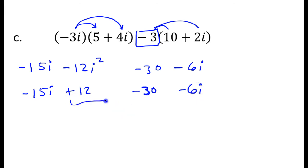So combining like terms, we've got the 12 and the negative 30. So that's going to be negative 18. And then of course, putting these together, we will have negative 21i. And you should write your answer in this order, put the imaginary term second. So that's the answer to c.